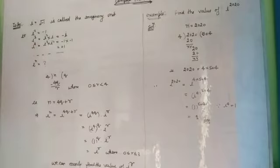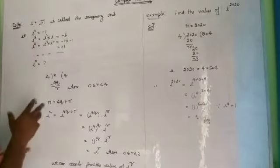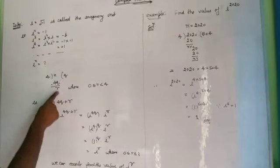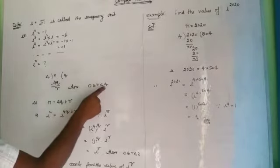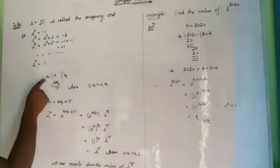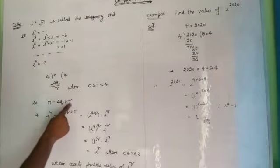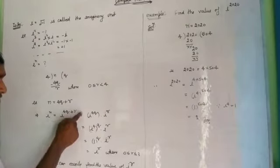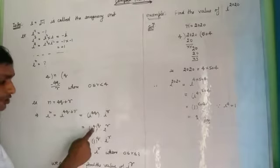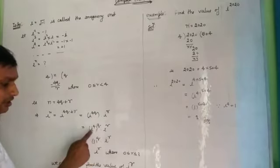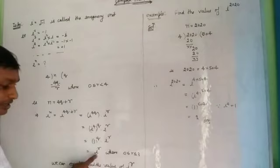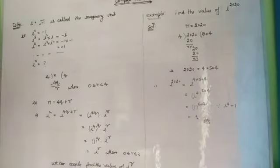Using these results, we can find the value of i to the power n when n is very large. If we divide n by 4, we get quotient q and remainder r, where r is between 0 and 3 inclusive. The relation is n equals 4q plus r, which implies i to the power n equals i to the power 4q plus r, equals i to the power 4 all raised to q, times i to the power r. Since i to the power 4 equals 1, this simplifies to 1 to the power q times i to the power r, which equals i to the power r. Since r is a small quantity, you can easily find the value of i to the power r.